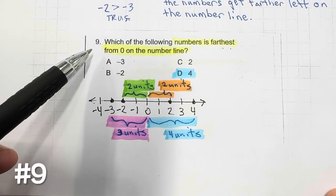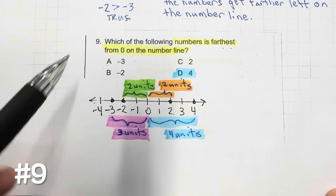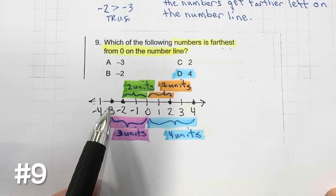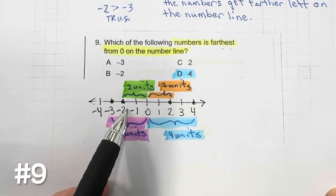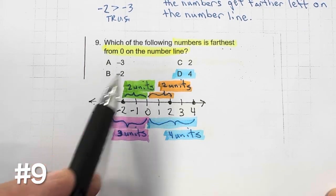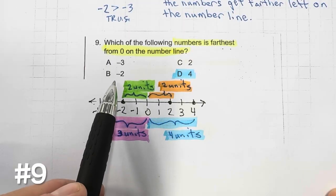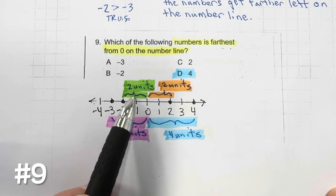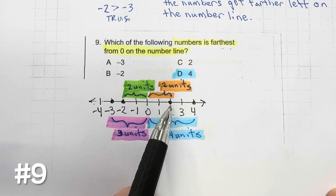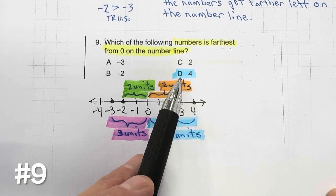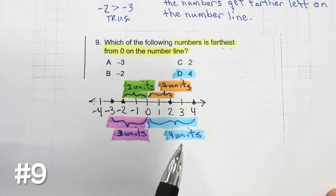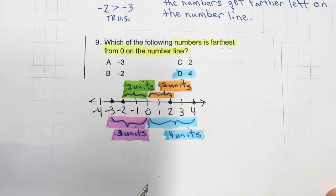Number 9: which of the following numbers is farthest from 0 on the number line? Negative 3 is 3 units away from 0. Negative 2 is 2 units away from 0. Positive 2 is also 2 units away from 0. And option D is 4 units away from 0. So D is the farthest from 0.